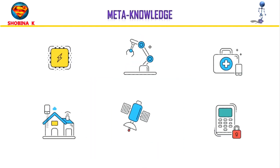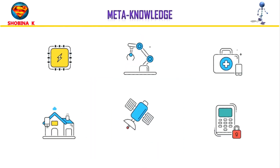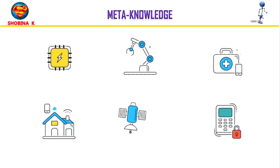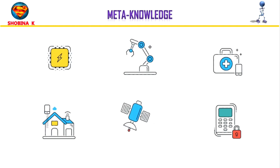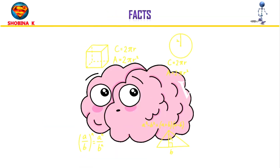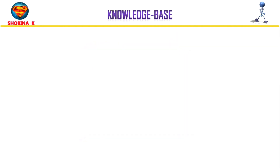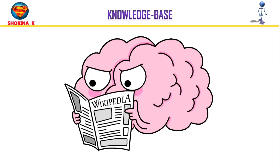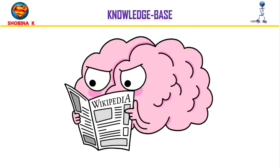Meta knowledge is knowledge about things we are already aware of — it is knowledge of what we know. Facts represent the reality of the actual world and what we stand for. Knowledge base, abbreviated as KB, is the most significant element of a knowledge-based agent. It refers to a set of information about any discipline or field — for example, a knowledge base on road construction. These were the different kinds of knowledge that need to be represented.